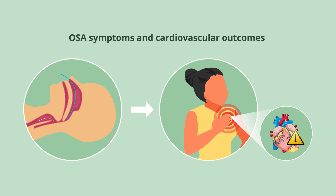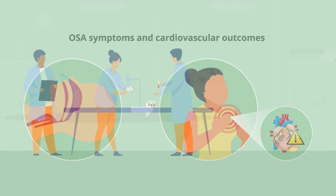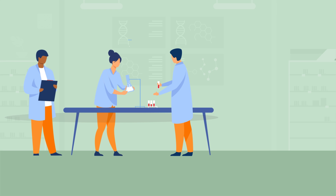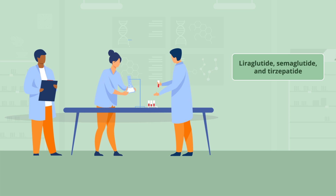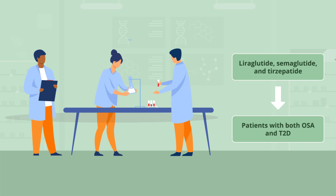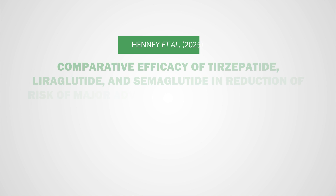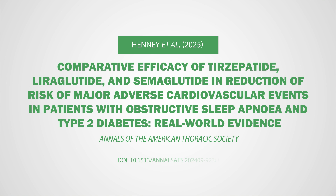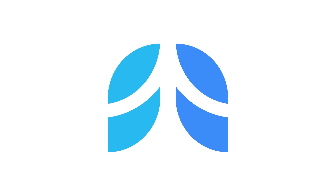Given the increasing global public health burden of OSA, type 2 diabetes, and cardiovascular disease, these findings offer important new insights that may help patients live better. More research is needed to better understand these findings and to clarify the utility of loraglutide, semaglutide, and trisepatide in treating patients with both OSA and type 2 diabetes. For more details, please read the article by Dr. Henney and colleagues. Thank you for watching Annals Animated.